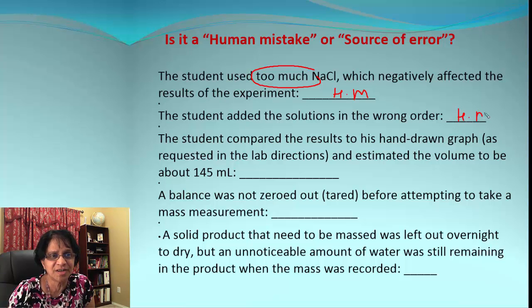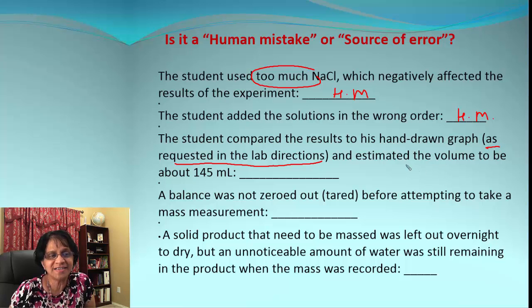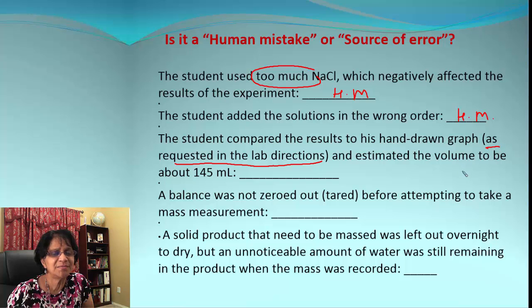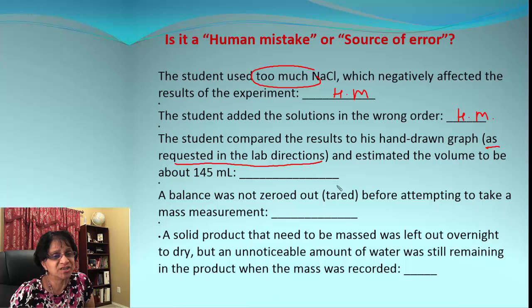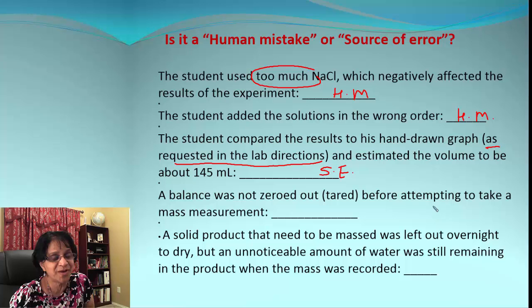Next: a student compared the results to a hand-drawn graph, as requested in the lab directions, and estimated the volume to be about 145. Could this be a human mistake? No, because the student did what they were supposed to do — following the lab directions. If the lab direction said the graph should be done differently, that would be a different story. In this case it is a source of error; maybe the procedure could be modified to get a better graph.